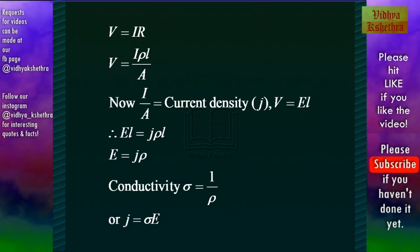Now conductivity, σ is the reciprocal of resistivity. Therefore, we can write current density J = σE.